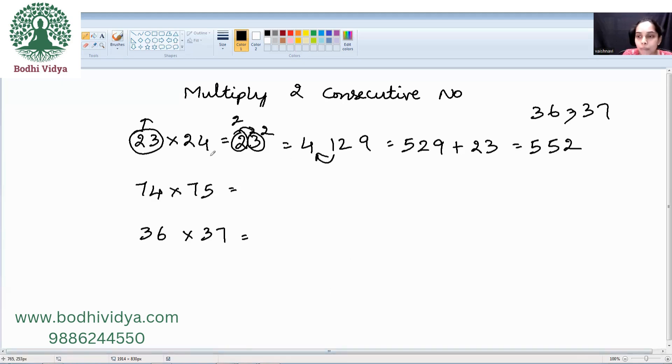We will look into one more example. Now, the least number is 74. I will make 74 square. That is nothing but 7 square is 49. 4 square is 16. Then 7 into 4 is what? 28 into 2.